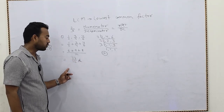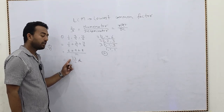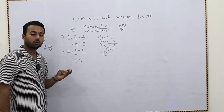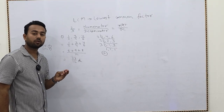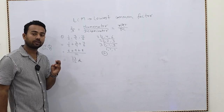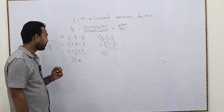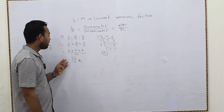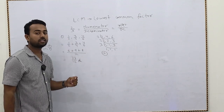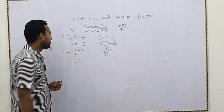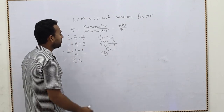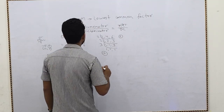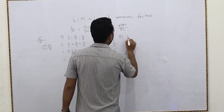We can also convert this into a mixed fraction. There are different types of fractions: proper fraction, improper fraction, like fraction, unlike fraction, and equal fraction. We will study those ahead. For now, let's take another example of LCM.